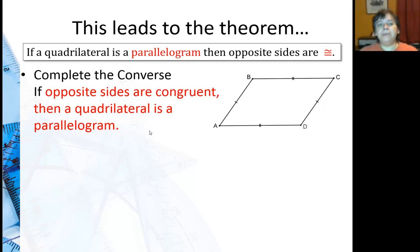Now let's see if the converse is true. The converse, remember you switch the if, what's behind the if goes to the then, and what's behind the then goes to the if. So instead of saying if a quadrilateral is a parallelogram, I now say if opposite sides are congruent, then a quadrilateral is a parallelogram. Is that true? So I drew this shape here, and it's a quadrilateral, and opposite sides are congruent. Does this have to be a parallelogram?